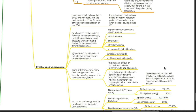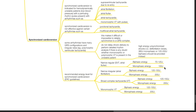Synchronized cardioversion is not effective against certain arrhythmias such as junctional tachycardia and multifocal atrial tachycardia. Some arrhythmias may have many QRS configurations and irregular rates, such as polymorphic VT, making it difficult to reliably synchronize to a QRS complex. Do not delay shock delivery for detailed rhythm analysis if there is doubt whether monomorphic or polymorphic VT is present in an unstable patient. High energy unsynchronized shocks — defibrillation doses of 360 J for monophasic or 120 to 200 J for biphasic — should be provided instead.